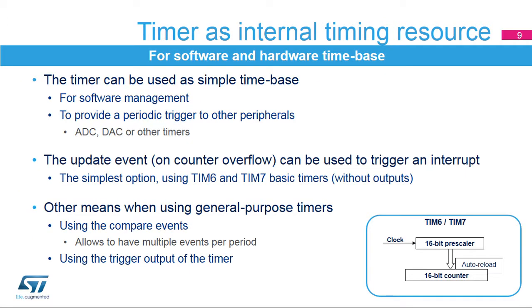The simplest use case for a timer is to provide an internal time base, commonly used by software routines to provide periodic interrupts or single-shot timeout protection. The timer can also provide periodic triggers to other on-chip peripherals, such as the ADC, DAC, and other timers. The update event from the timer, typically on counter overflow, is the usual means to have a software time base interrupt or to trigger a periodic event. The basic timers, TIM-6 and TIM-7, are best suited for such a task, as they are the simplest timer derivatives with no input-output channel. It is also possible to generate multiple timing events with a single timer using multiple compare channels.